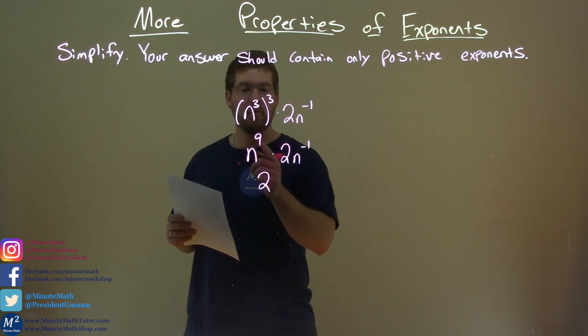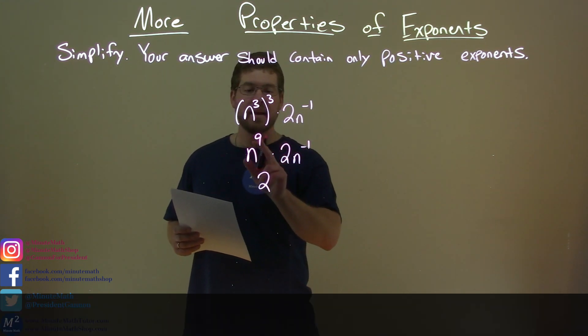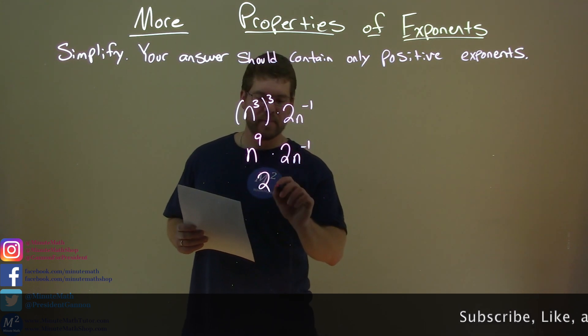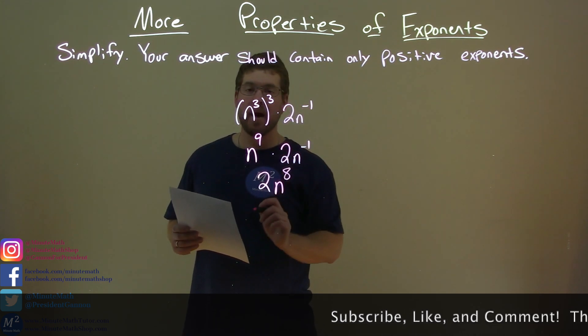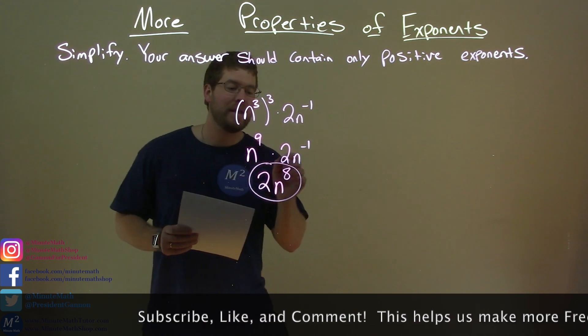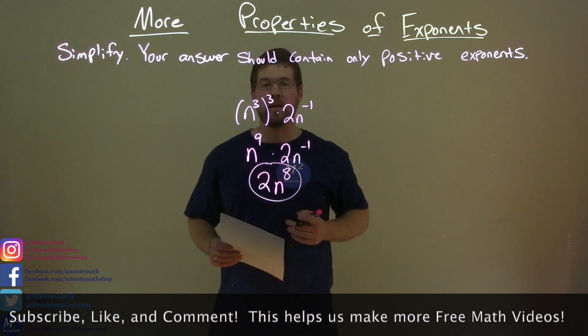Here we have the same base. We add the exponents. 9 plus a negative one is an 8. So we have n to the eighth power, and now we're done. We have 2n to the eighth power as our final answer.